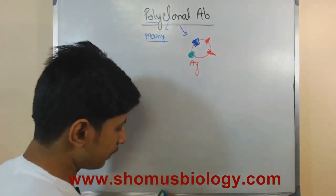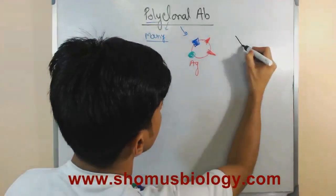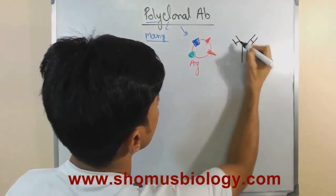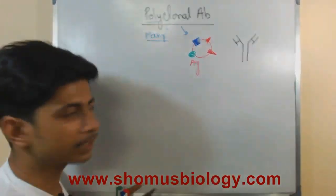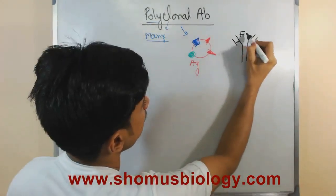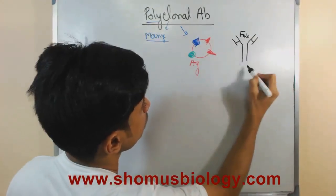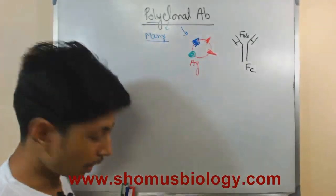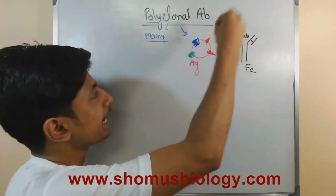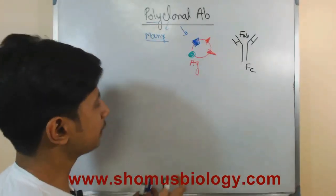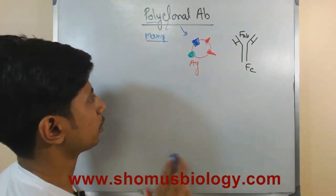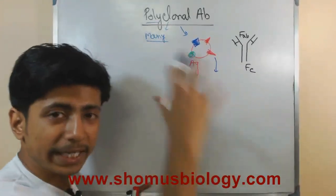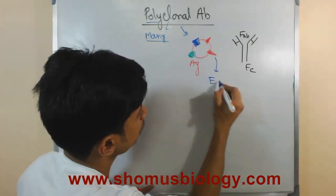If I draw the antibody here — this is the antibody. It has the AB portion and the FC portion. So this antibody can interact with this epitope. This is very important: it does not interact necessarily with the complete antigen, but with different epitopes on the antigen.